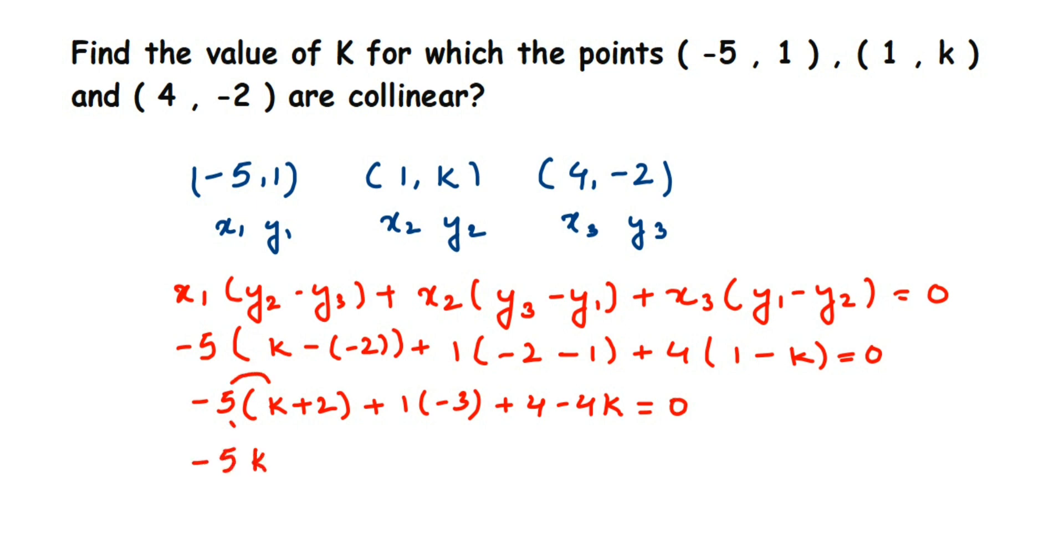Now open the brackets. -5 times k is -5k, -5 times 2 is -10, then -3 + 4 - 4k = 0.